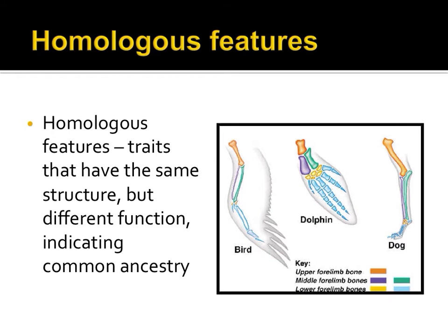Homologous structures are those that possess a similar structure but a different function. In the picture to the right, all organisms have the same bones — a radius, an ulna, metacarpals, a humerus — but they serve very different functions: flying, swimming, walking. Homologous features suggest that these organisms shared a common ancestor. Why would organisms possess the same structures for such different functions, unless they were adapted for different purposes over a considerable amount of time?